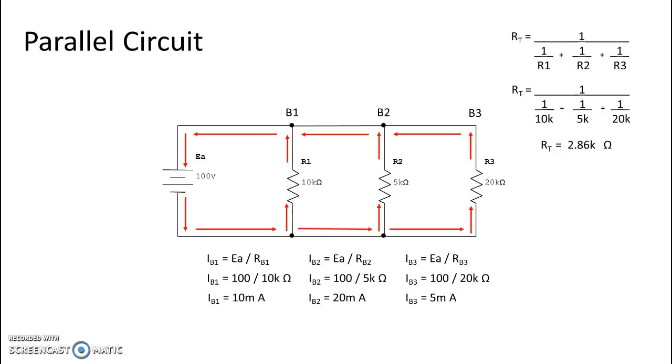Now there are a couple of ways to combine current together. You can add them if you figure out all the individual branch currents, or you can use Ohm's law. So we're going to start with adding them together.